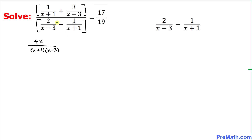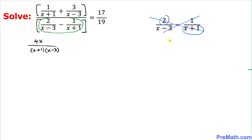Now let's focus on the denominator part. I have just copied it down on the right-hand side. Let's go ahead and simplify that one as well by using a crisscross method. If we multiply 2 times x plus 1, we are going to get 2x plus 2.